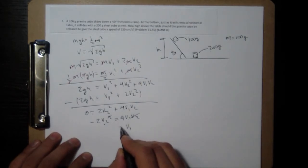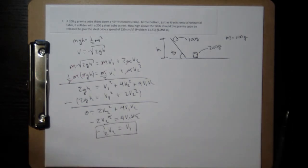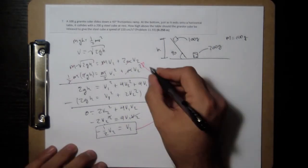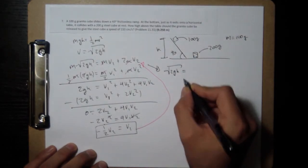So v1 is going to be equal to negative 1 half v2. This is what I want, so that I can substitute into this equation.